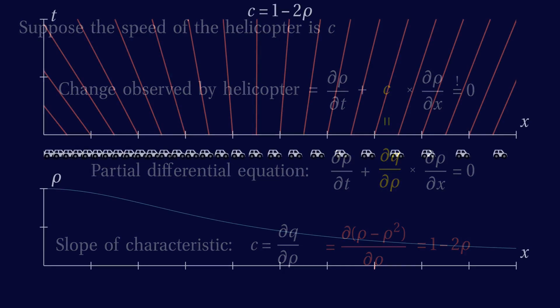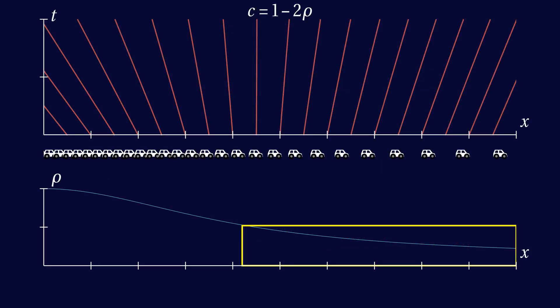Note that in light traffic, when rho is less than half, c is positive, so the characteristics slope forward. But in heavy traffic, when rho is greater than half, c is negative, so the characteristics slope in the opposite direction.